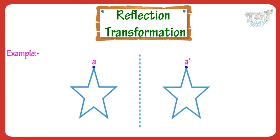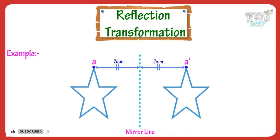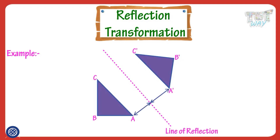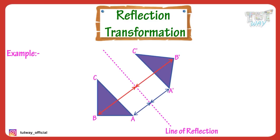ABC is the reflected triangle. A and A-prime are equidistant from the line of reflection. B and B-prime are equidistant from the line of reflection. C and C-prime are equidistant from the line of reflection.